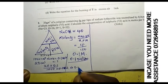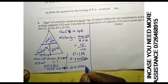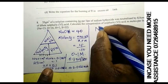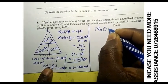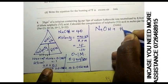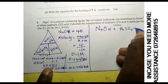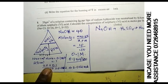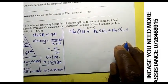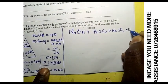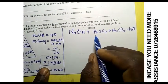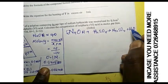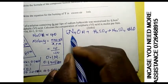Now let us write a balanced equation. Sodium hydroxide reacting with sulfuric acid gives us sodium sulfate plus water: 2NaOH + H₂SO₄ → Na₂SO₄ + 2H₂O. We balance the equation — there are two sodiums on the right, so we place a coefficient of 2 on the NaOH.